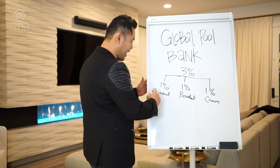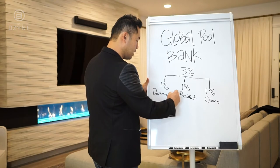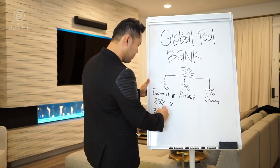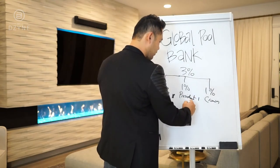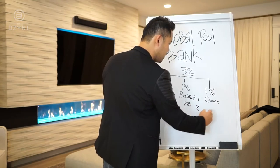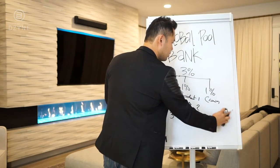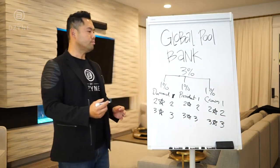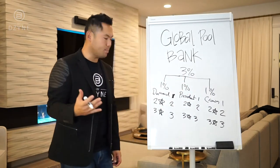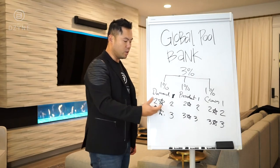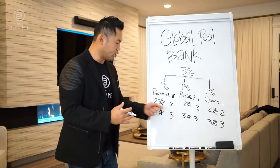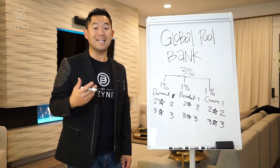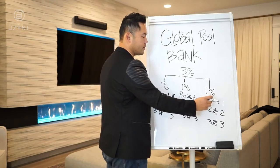If you are a Diamond, you get one share. If you're a two-star Diamond, you get two shares; three-star Diamond gets three shares. If you're a President, one share; two-star President, two shares; three-star President, three shares. Crown gets one share, two-star Crown gets two shares, three-star Crown gets three shares. Importantly, if you're a President you only earn from the President pool — not the Diamond pool — so we don't dilute the pools. Similarly, Crown earns only from the Crown pool.